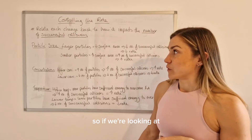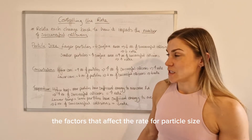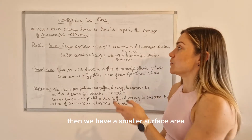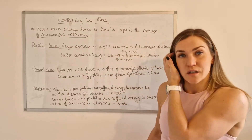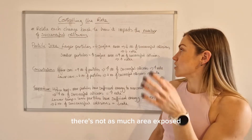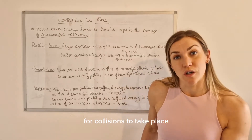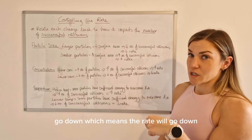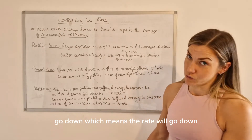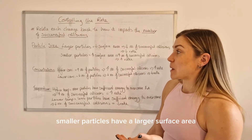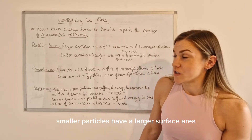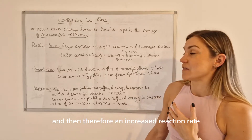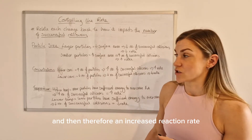Looking at the factors that affect rate — for particle size, if we have larger particles then we have a smaller surface area. Smaller surface area means there's not as much area exposed for collisions to take place, so the number of successful collisions goes down, which means the rate goes down. Smaller particles have a larger surface area, so we will have more successful collisions and therefore an increased reaction rate.